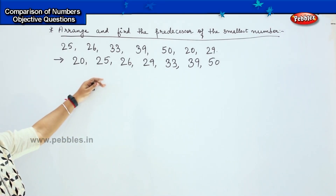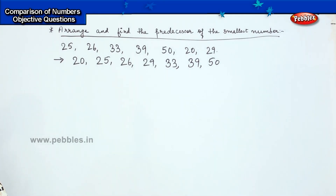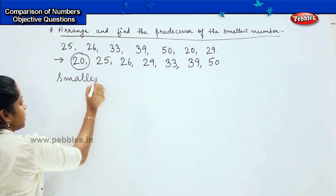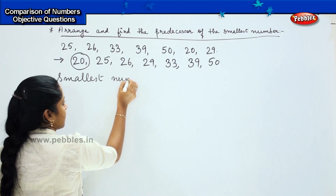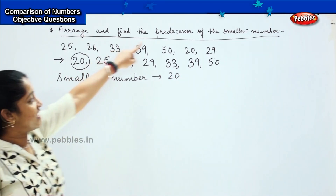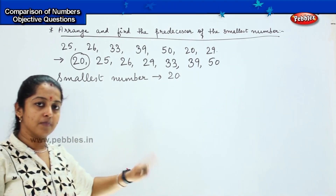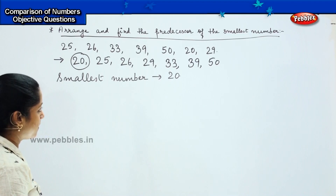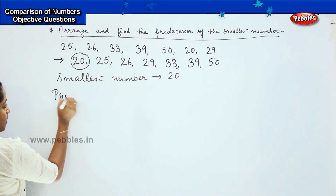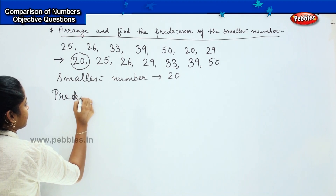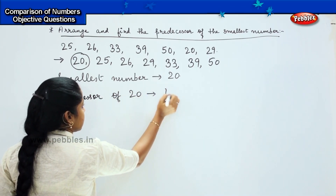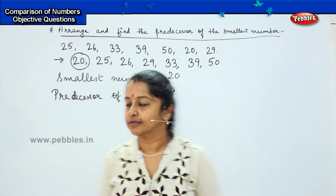Now we have arranged the numbers from small to big. Can you figure out which is the smallest number? 20 is the smallest number. So the smallest number is 20 and you need to find the predecessor of 20, which is the number which comes before 20. The number which comes before 20 is 19. So you can write it as: predecessor of 20 is 19. Did you understand this question?